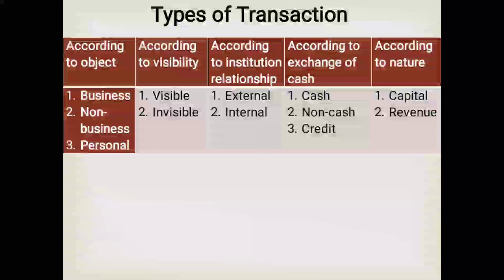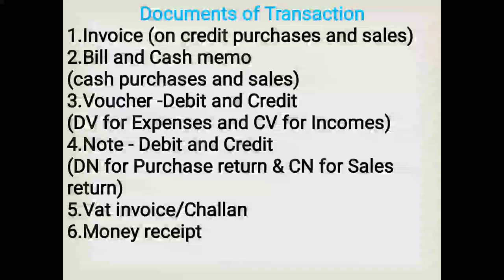Now we go to documents of transaction — a very important item. When any transaction occurs, a document or evidence is required. Number one, invoice — used for credit purchases and credit sales. Number two, bill and cash memo — used for cash purchases and cash sales. Number three, voucher — debit voucher is used for expenses and credit voucher for incomes. Number four, debit note and credit note — debit note for purchase returns and credit note for sales returns. Number five, delivery invoice or delivery challan, and money receipt.